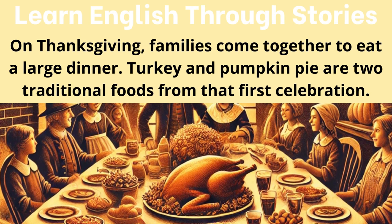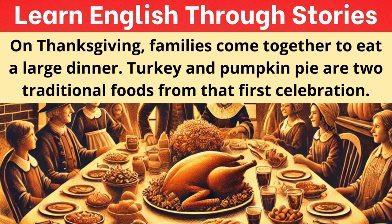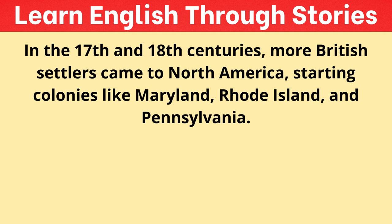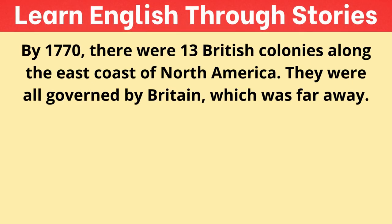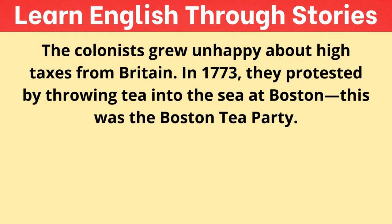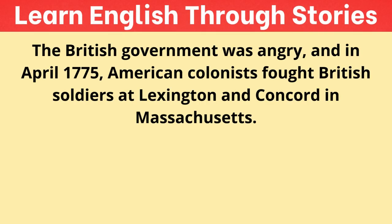Chapter 2: The War of Independence. In the 17th and 18th centuries, more British settlers came to North America, starting colonies like Maryland, Rhode Island, and Pennsylvania. By 1770, there were 13 British colonies along the east coast of North America. They were all governed by Britain, which was far away. The colonists grew unhappy about high taxes from Britain. In 1773, they protested by throwing tea into the sea at Boston — this was the Boston Tea Party. The British government was angry, and in April 1775, American colonists fought British soldiers at Lexington and Concord in Massachusetts. The Americans won, and the British had to retreat to Boston. The Battle of Bunker Hill soon followed, making it clear that war had begun.